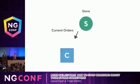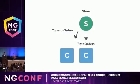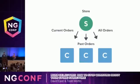You might have a component that renders a list of current orders, so the obvious thing is to make that a custom slice in the store. Then you have another component responsible for rendering past orders, so you store that in the store as well. But then you need to store all orders, and this is where it got kind of weird.